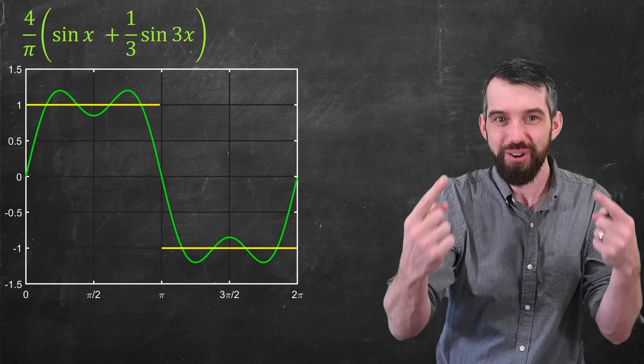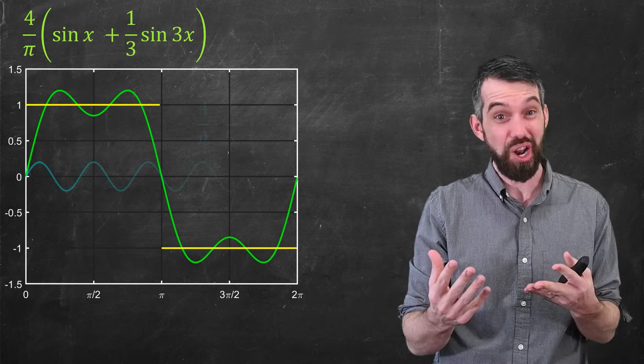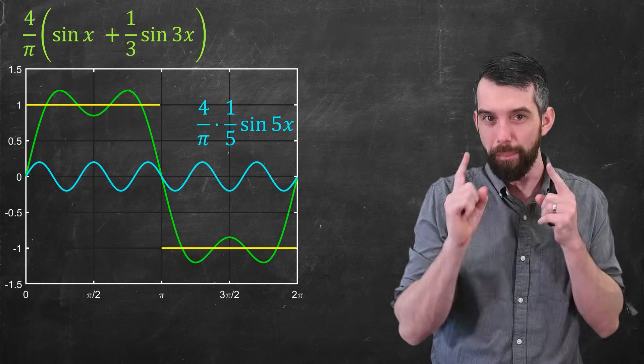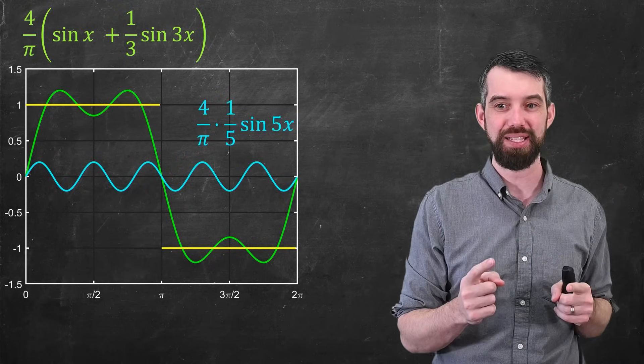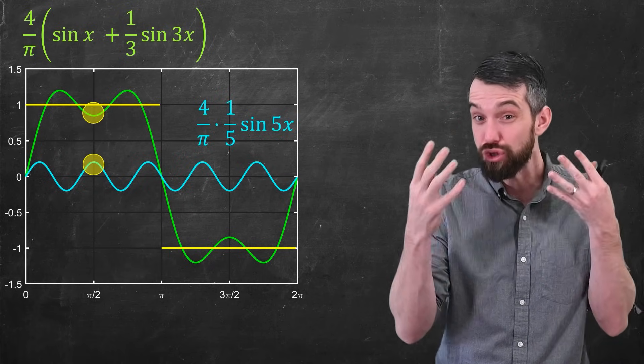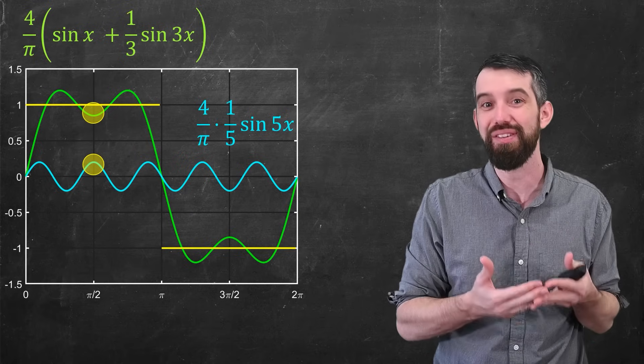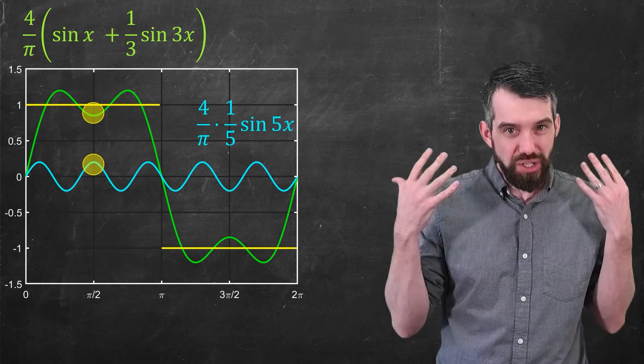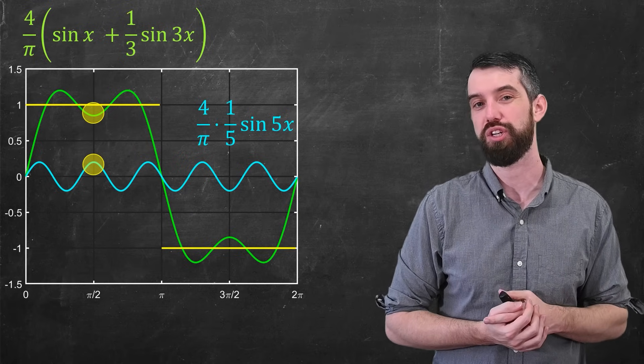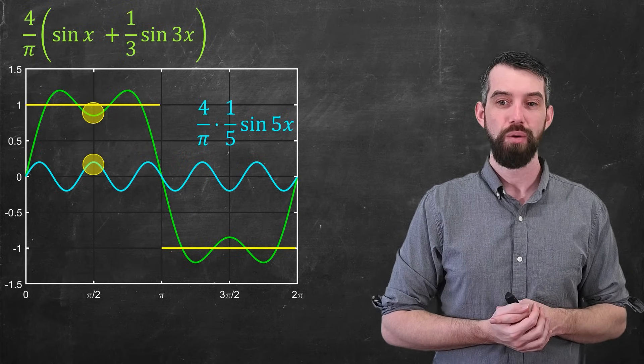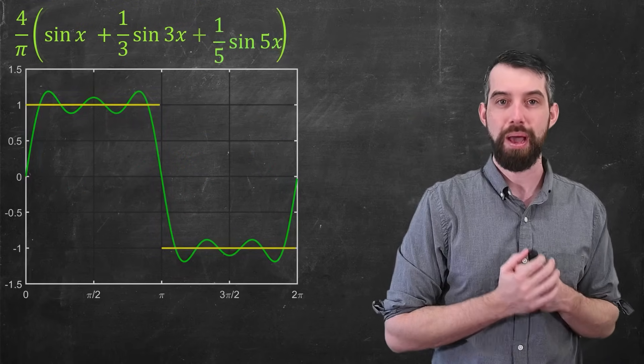Let me add another sine term, sine of 5x. It oscillates even faster. But it still sort of makes sense here because, for example, a little trough in the green curve is kind of aligned with a peak in this new curve, this sine 5x curve. So if I add them together, well, I get yet again a better approximation.